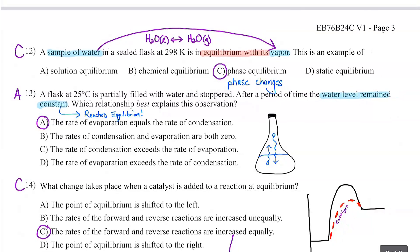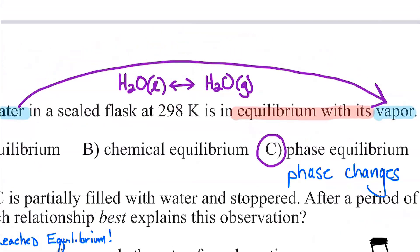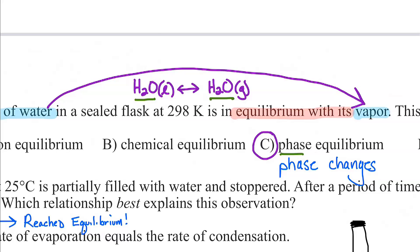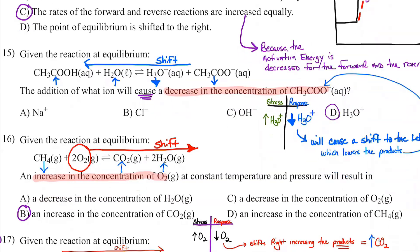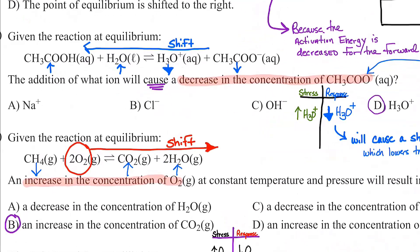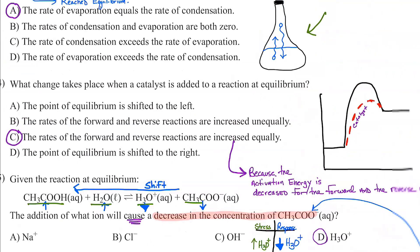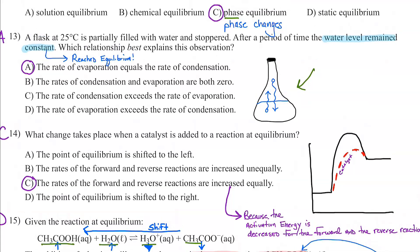Number twelve: a sample of water is sealed in a flask and is in equilibrium with its vapor. If we've got H2O liquid becoming H2O gas, those are phase changes, so this is phase equilibrium. Chemical equilibrium is when things are chemically changing, not phase — phase changes are physical. Solution equilibrium is when something is dissolving and becoming a precipitate.